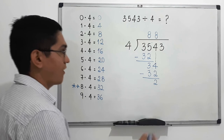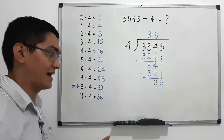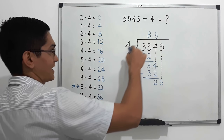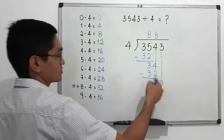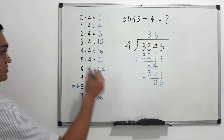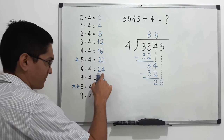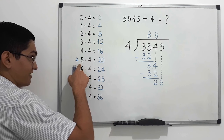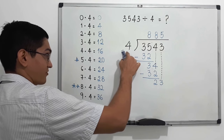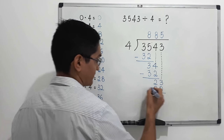After the subtraction, we bring down the next digit — it's a three — giving us 23. We ask: what number from zero to nine do we multiply by four to get 23, or almost 23 but not more than 23? That number is five, since six times four equals 24, which is greater than 23. We write five in our quotient.